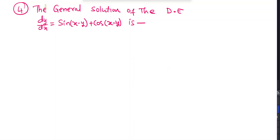This is the fourth question. The general solution of dy/dx = sin(x - y) + cos(x - y). Take x - y = t, so differentiating both sides gives 1 - dy/dx = dt/dx, meaning dy/dx = 1 - dt/dx. Substituting: 1 - dt/dx = sin t + cos t, so dt/dx = 1 - cos t - sin t.